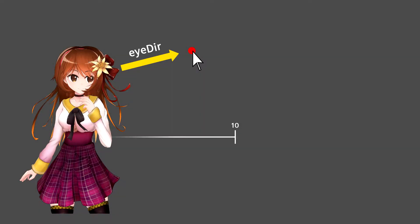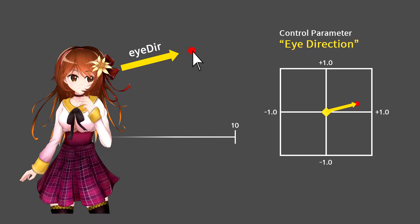Now let's make the character look at the mouse. The vector Idir points from the center of the character's head to the mouse position. Suppose the character is looking sideways when the mouse is at a distance of 10. Convert that to the Idirection control parameter by converting a vector with a size of 10 to a two-dimensional vector with a size of 1, and set it as the control parameter.